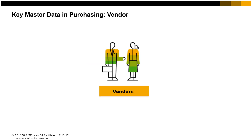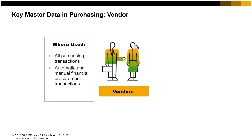Now, let us look at key master data information needed for the purchase order. The first required piece of master data is the vendor. The vendor is one of the three types of business partner master data maintained in SAP Business One. Vendor data identifies who is supplying the goods and services. You use vendor master records in all purchasing transactions. The vendor is also used in automatic and manual financial procurement transactions.